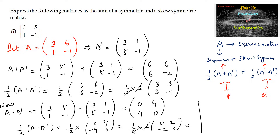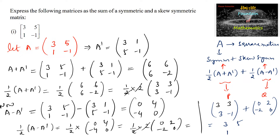We can verify: (1/2)(A + A transpose) + (1/2)(A − A transpose) equals [3,3;3,-1] + [0,2;-2,0] = [3+0, 3+2; 3-2, -1+0] = [3,5;1,-1], which is nothing but matrix A. So A plus A transpose plus A minus A transpose divided by 2 gives back matrix A.